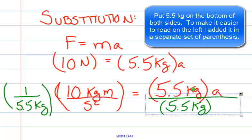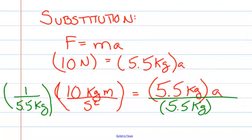If we do that, we're able to cross out 5.5 and 5.5. We're able to cross out kilograms and kilograms on both sides.